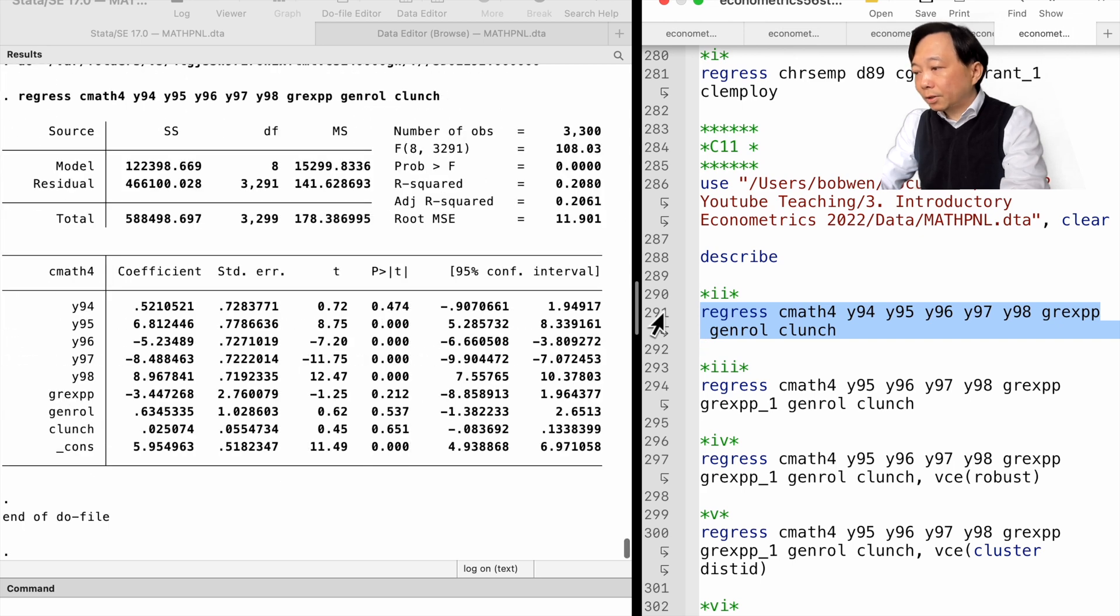Here is the estimation result in Stata. The coefficient on the spending variable is minus 3.45, implying that the math test passing rate decreases by 0.345 percentage points if spending increases by 10%. It's not expected, but the effect is not statistically significant at the 10% level.